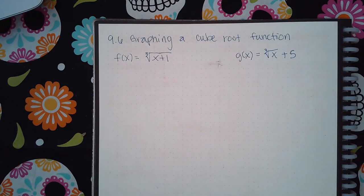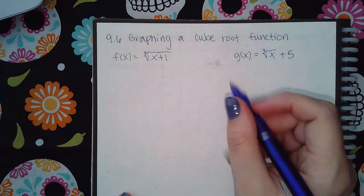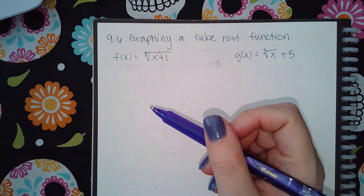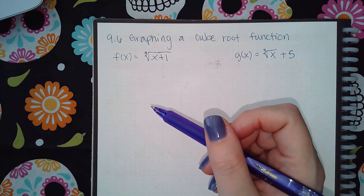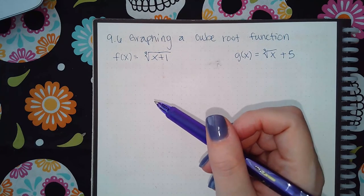Here we have 9.6 graphing a cube root function. Just like the absolute value, squared function, and square root functions, you always take what is inside that main function and set it equal to zero to figure out the center of your graph.